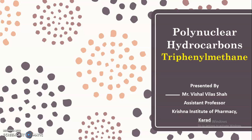Today we are going to see the last compound of the polynuclear hydrocarbons, that is triphenylmethane. In the previous video, we covered diphenylmethane — its methods of preparation as well as the chemical reactions. If you are coming to my YouTube channel for the first time, I request you to watch the previous videos by subscribing so that you get an idea about the different compounds we have covered.